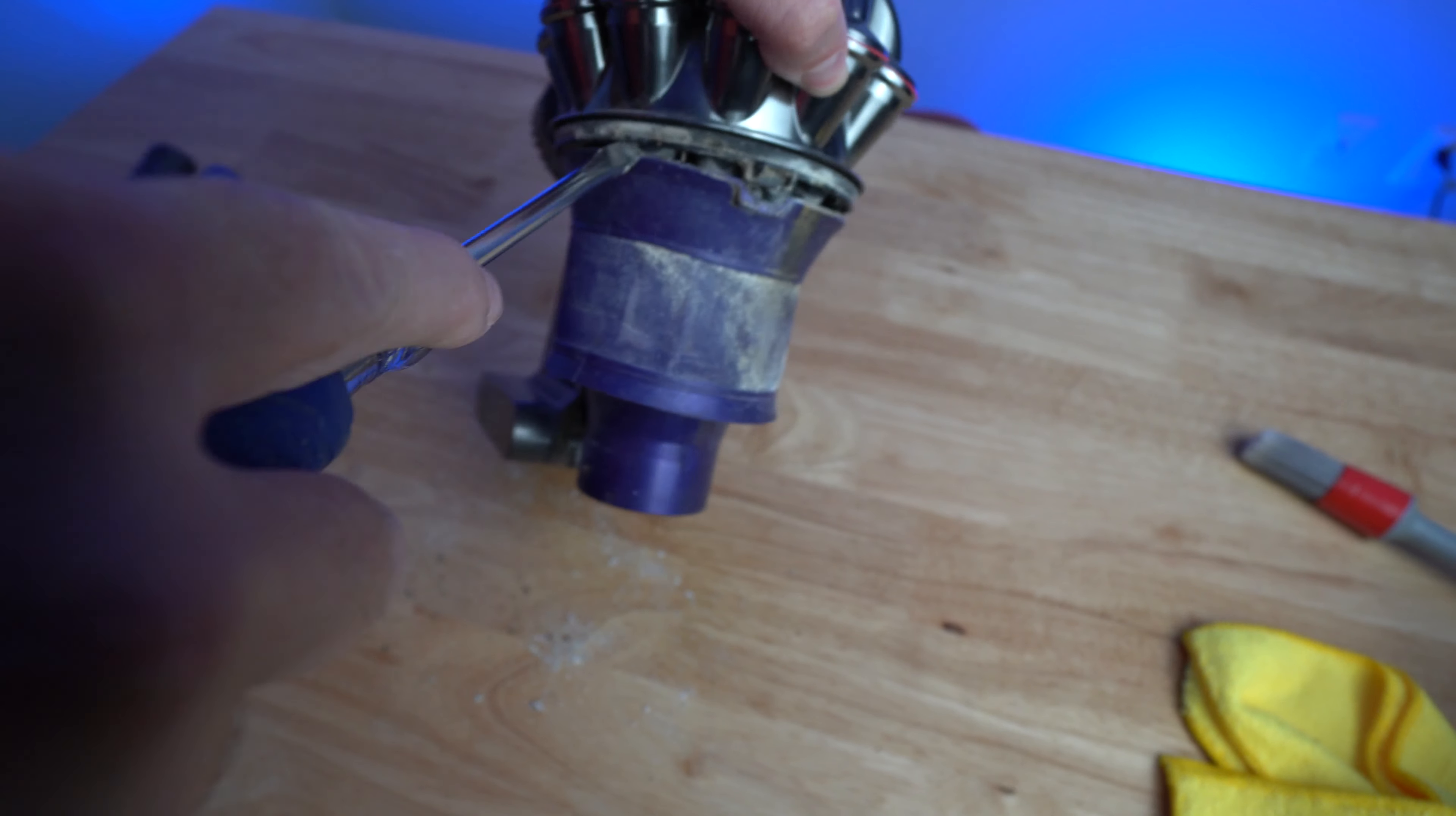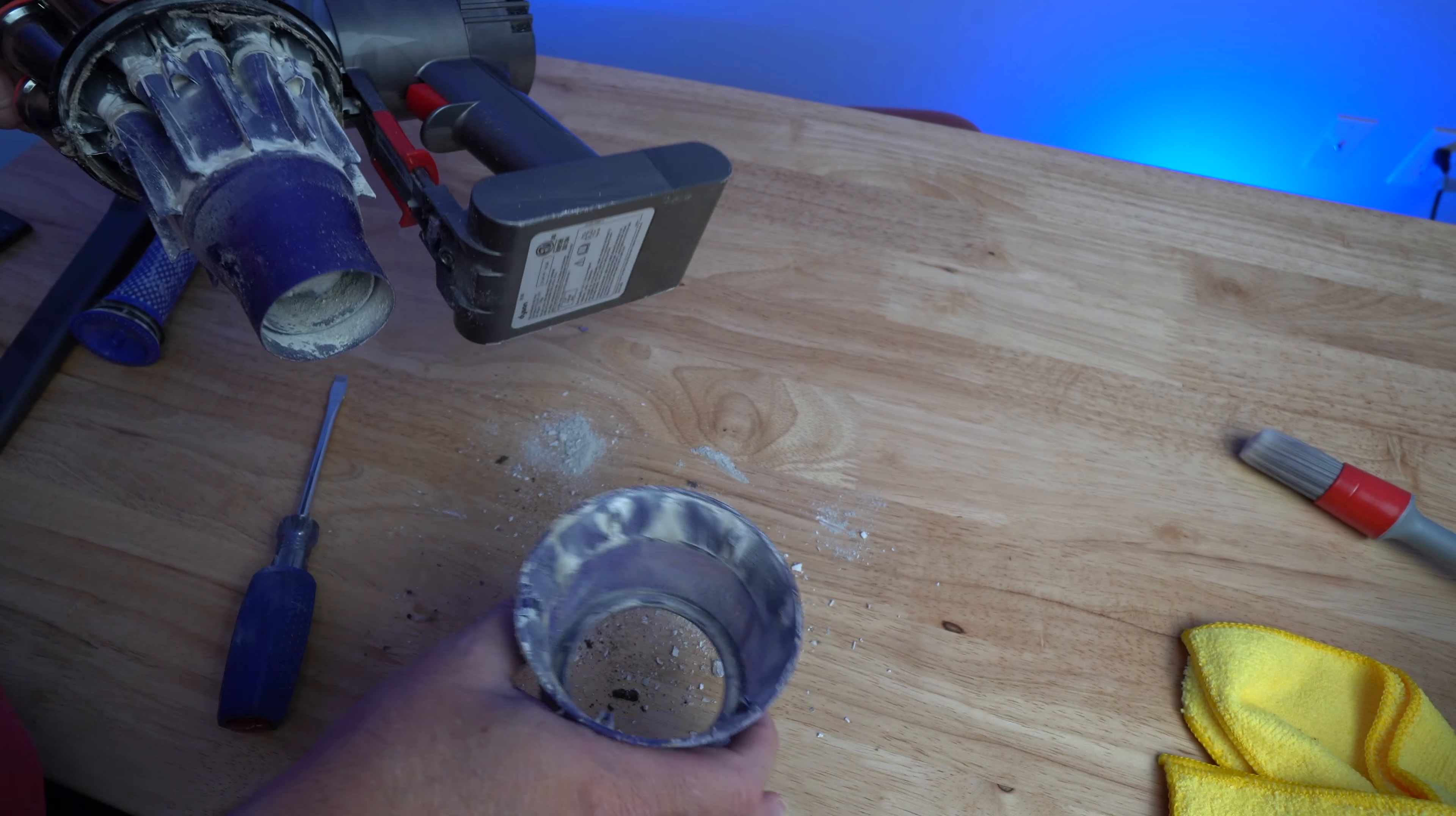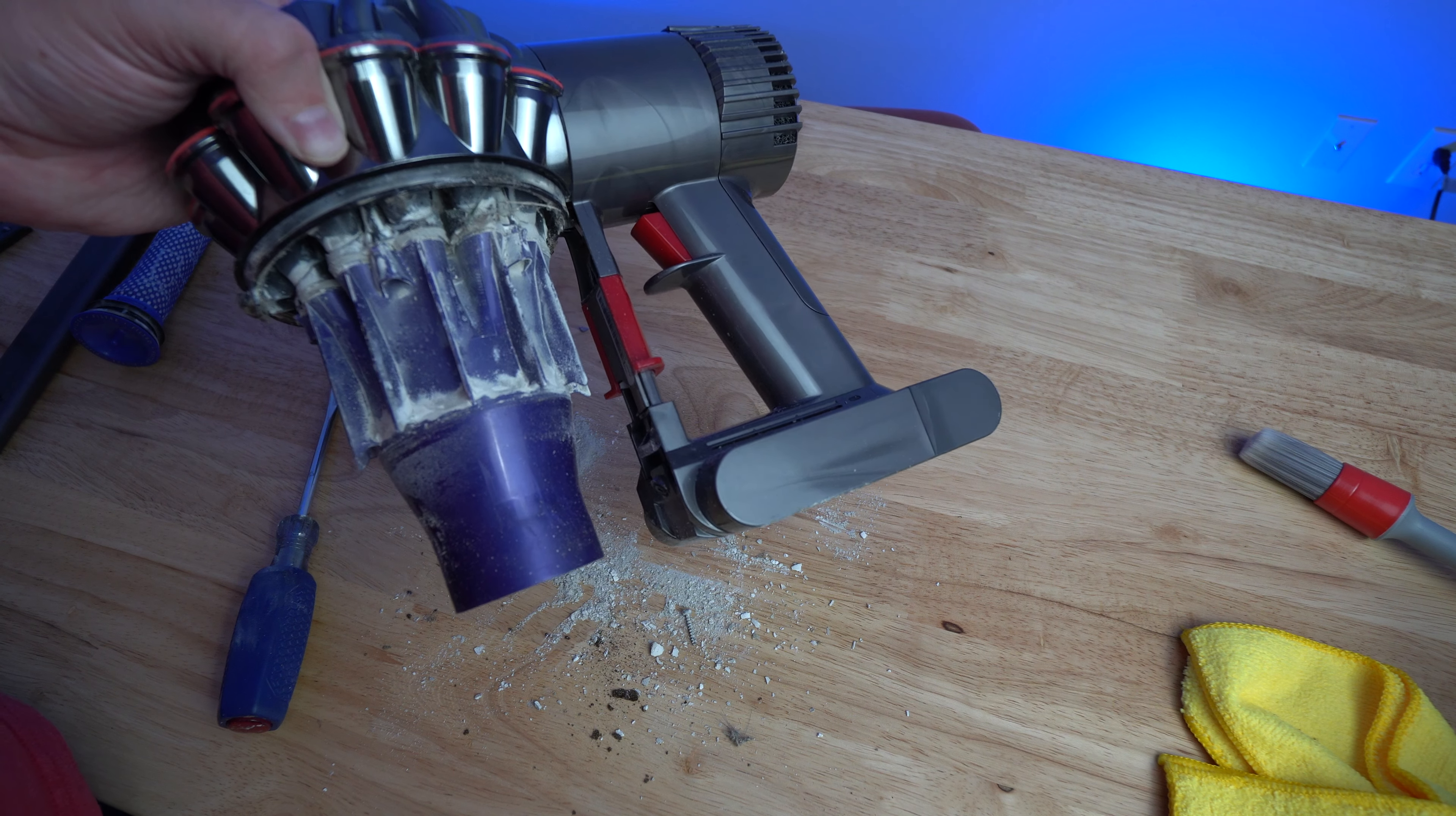There you go, it's off. So now you can clean this completely out. As you can see, there's a lot of dust and stuff that's stuck in there. And you can use that brush to clean in here and clean all this and the motor compartment and get all that kind of cleaned out. And this thing will go back in there and clip back in. So we're going to go ahead and clean it all up and get it ready to go here.